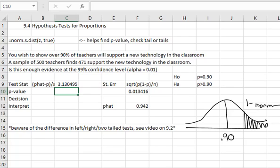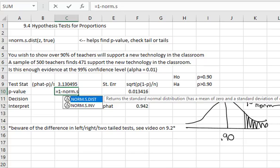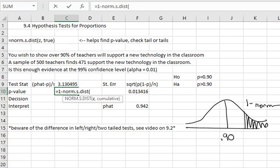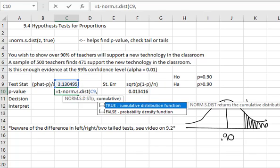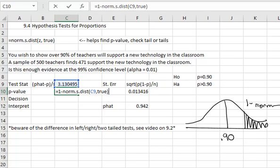For our p-value, we have to remember we're doing a right-tailed test, so we're going to have to work with the complement. So we will say equals 1 minus, to get us the right tail, norm.s.dist, open a parentheses, select our test statistic that we just calculated, comma, true. And when we hit enter, we find the p-value is 0.000873.